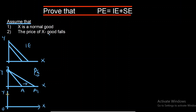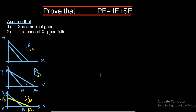Let the initial budget line be AB. If there is a fall in price of X good, the consumer imagines that purchasing power for X has increased, so the budget line moves right on the X axis and downward on the Y axis. This new budget line is also known as the imaginary budget line, because the consumer thinks X is relatively cheaper than Y — purchasing power for Y has decreased and for X has increased. So: parallel lines = income effect, pivotal lines = price effect, crossing lines = substitution effect.